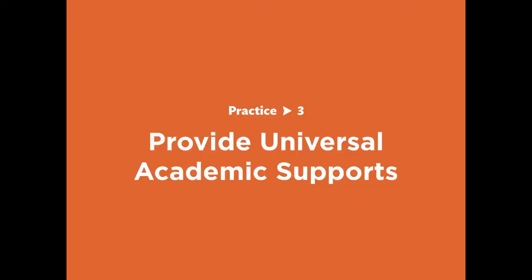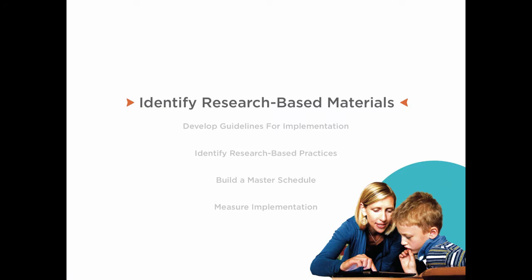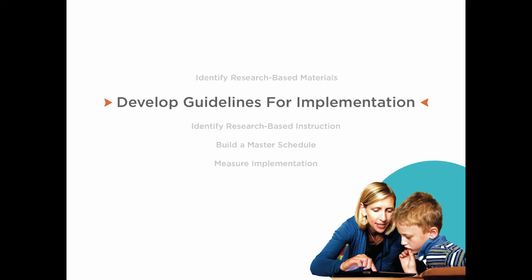Practice number three: create universal academic supports for all students. This practice is all about core instruction. Reflect on what is taught, how it is taught, how much time is allocated, and how the principles of universal design for learning and differentiation address student need. Identify research-based core curriculum and materials. When planning universal supports, it's important to make sure the core curriculum that all students have access to is strong and supported by research, and consider what we want to be present and consistent across all learning environments.